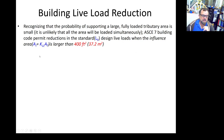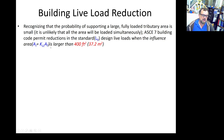Because of that, the ASCE 7 specification allows for a reduction in the design live load under certain circumstances. The influence area has to be larger than 400 square feet. By influence area, I mean the tributary area multiplied by this factor KLL, which depends on what type of element we are studying.